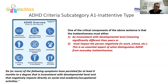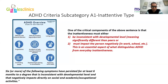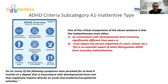For a diagnosis of inattentive ADHD, six or more of the nine inattention symptoms must have persisted in the last six months to a degree inconsistent with the child's developmental level — different from peers of the same age group — and must affect academic learning and day-to-day routine activities.